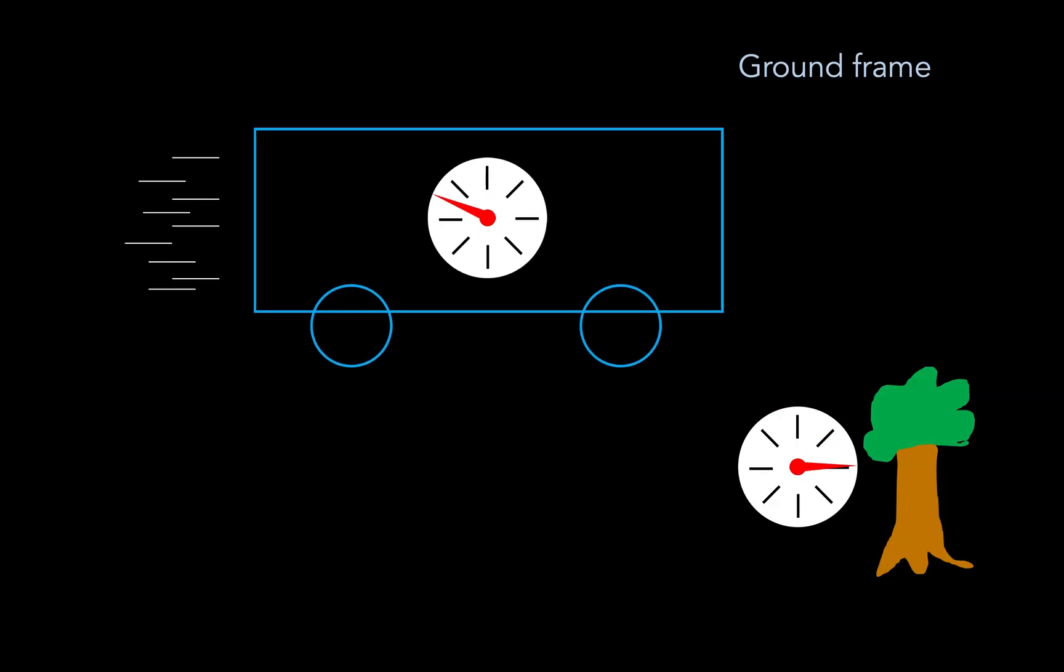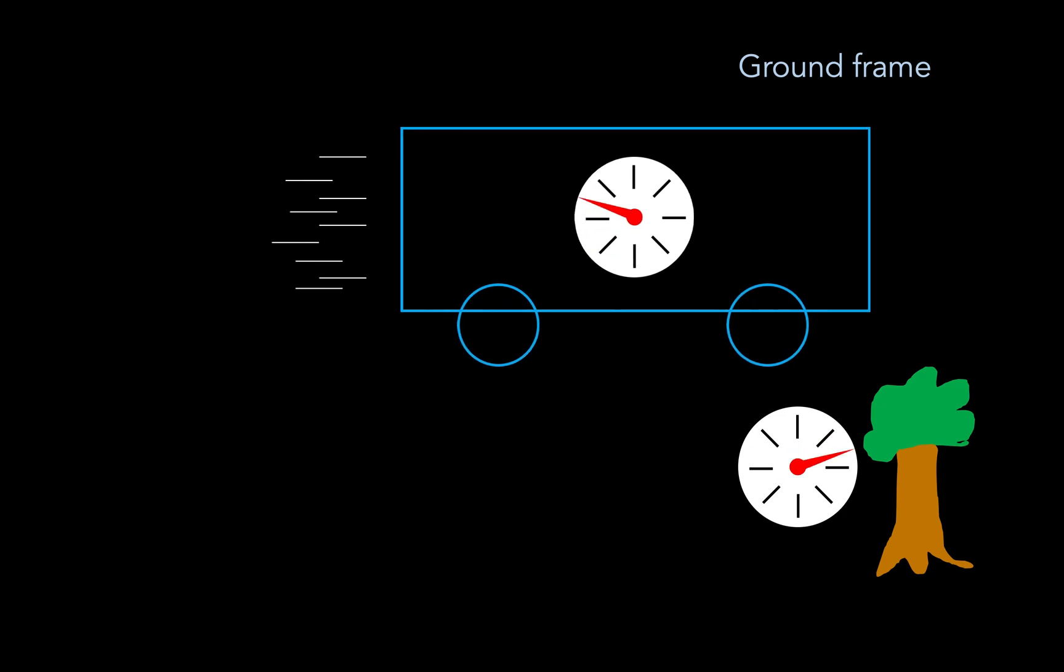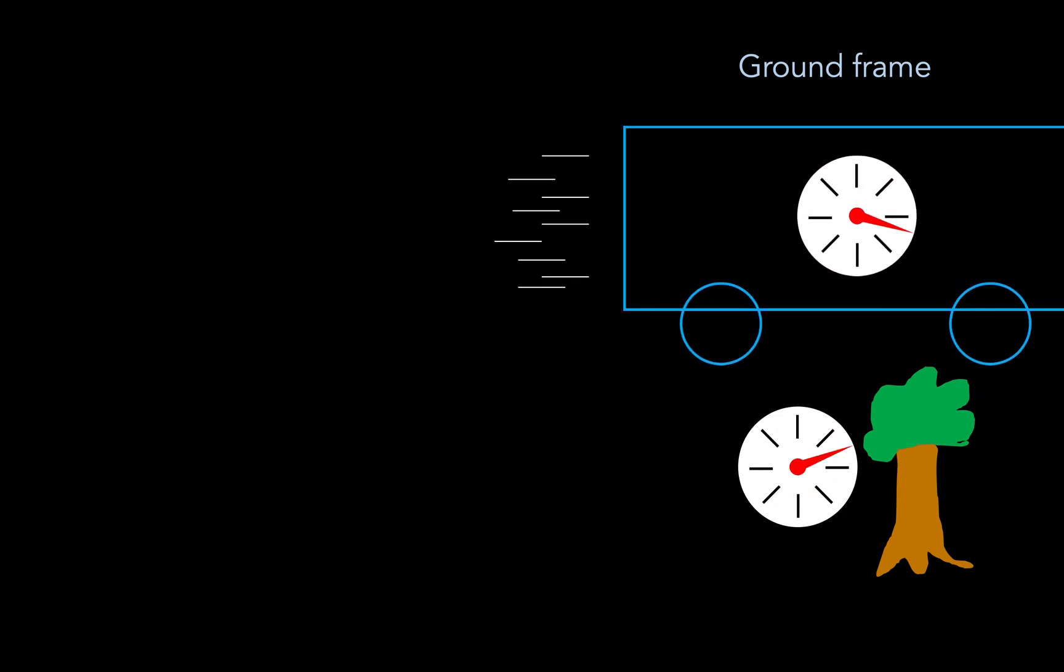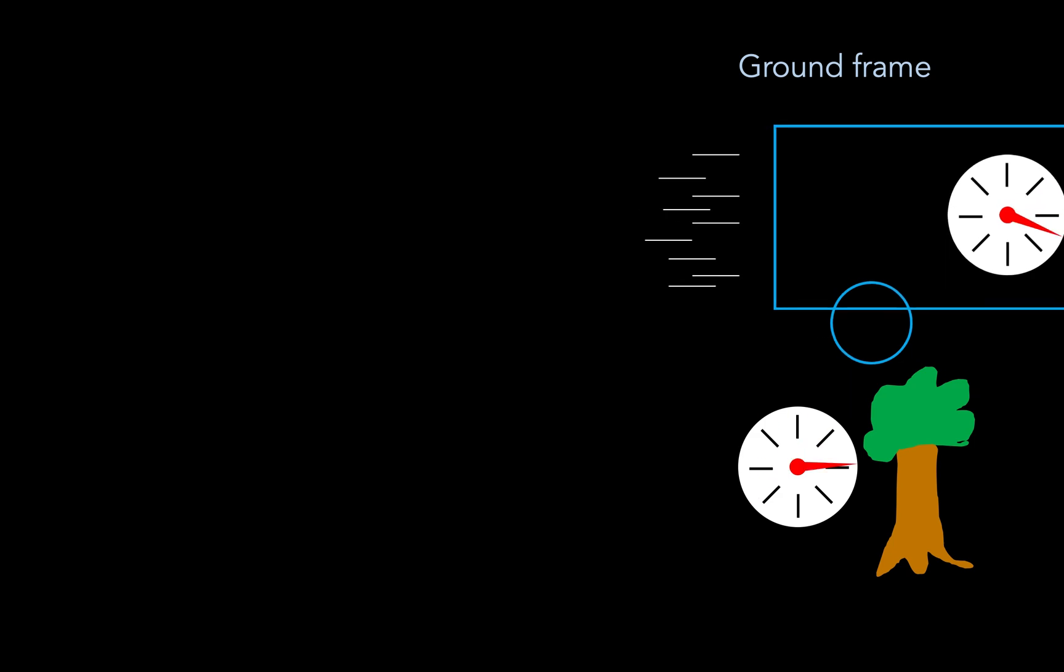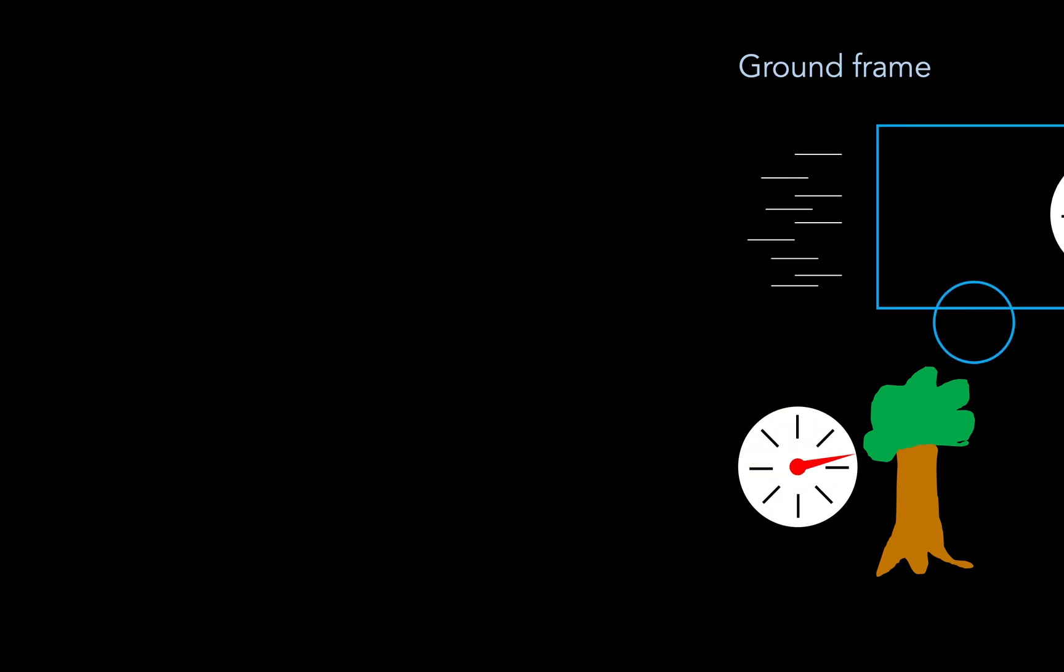Now according to special relativity, time moves slower for moving observers. So if we have a moving train, then an observer on the ground will observe that a clock on the train ticks more slowly than a clock on the ground. This effect is called time dilation, and if you want to know why it happens, check out my video.